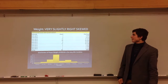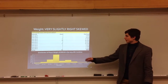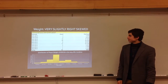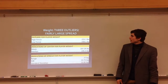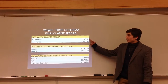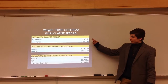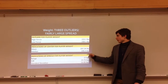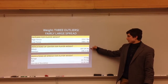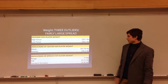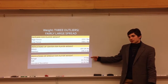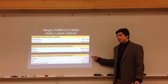For weight, the distribution is very slightly right-skewed — could even be considered symmetrical. There were three outliers for weight. The center was pretty close with the mean and median. The range was 77 pounds — that's almost 80 pounds, almost half of me — so that's a pretty wide spread.